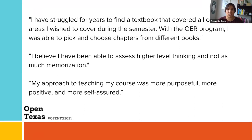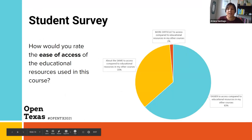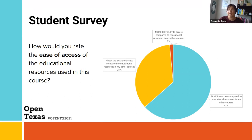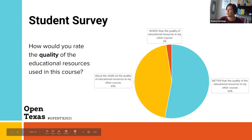Those kinds of quotes really help tell the story of OER. From our student surveys — adapted from the University of Texas at Arlington — when asked how they would rate the ease of access, 63% said it's easier to access compared to materials used in other courses, 35% said it's about the same, and very few said it's more difficult. When asked about the quality of educational resources, a little more than half said better quality compared to other courses, 45% said about the same, and again very few said it's worse.